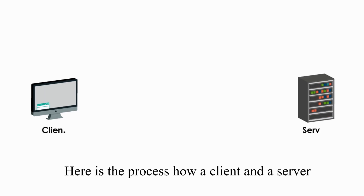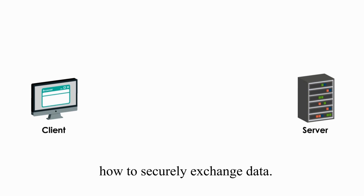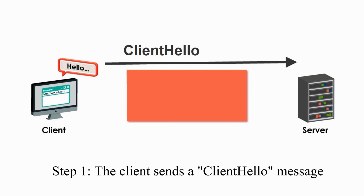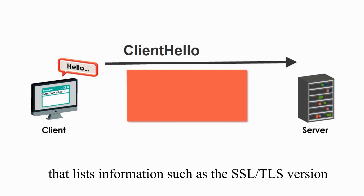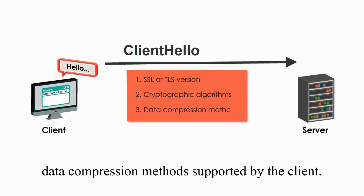Here is the process of how a client and server use the Handshake Protocol to negotiate how to securely exchange data. Step 1: The client sends a Client Hello message that lists information such as SSL/TLS version, and the cryptographic algorithms and data compressing methods supported by the client.